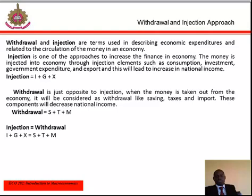Withdrawal is the opposite of injection. When money is taken out from the economy, it is considered as withdrawal — for example, savings, taxes, and imports. These components will decrease national income. The equation for withdrawal is S plus T plus M, where S stands for savings, T stands for taxes, and M stands for imports.